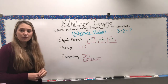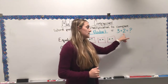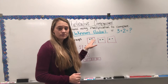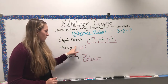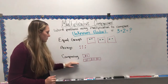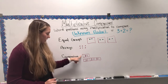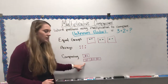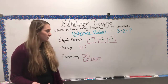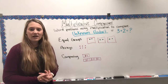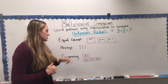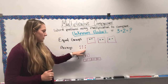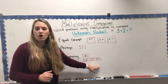Using the numbers three times two as examples: for equal groups, we would have three groups of two. For arrays, we would have three rows of two. And for comparing, we would use the bar model — a box that equals two, with three boxes below that each equal two to make six. So we're looking at equal groups, arrays, and the bar model to find our unknown product.